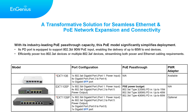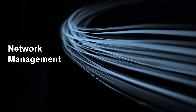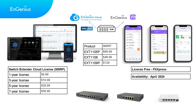The switch extender family is a reliable solution with a potential mean time between failures (MTBF) of 230,000 hours, making it highly reliable and long-lasting. Once installed, the devices require minimal to no repairs or routine maintenance, saving time and money. To cater to network extension requirements, we provide support for both Ingenius Cloud and Fit Press Cloud Management. The MSRP is $99.99 for EXT1105P, $49.99 for EXT1106, and $129 for EXT1109P.